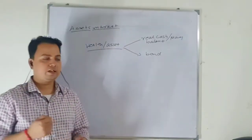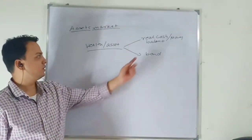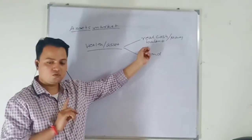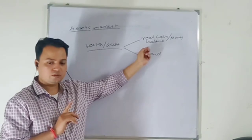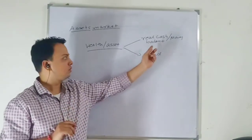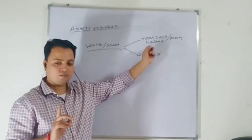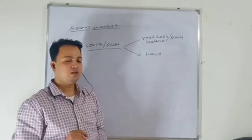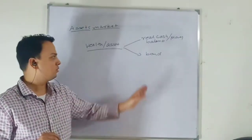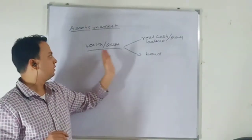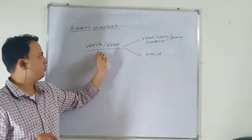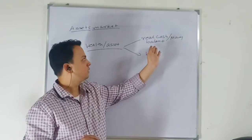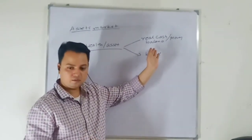So there is a demand for idle cash balance. Money acts as a store of value. That is a demand for idle cash balance — that is your demand for money. Then we talk about bonds. So assets or wealth is kept in two forms: in the form of idle cash balance and bond.